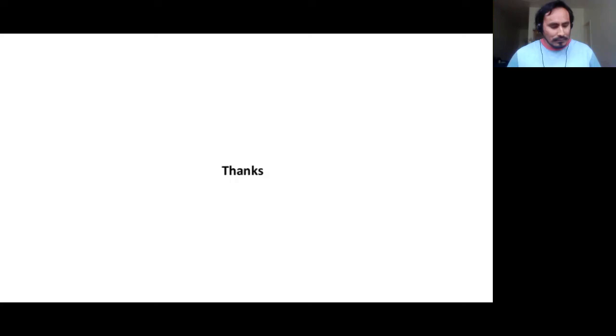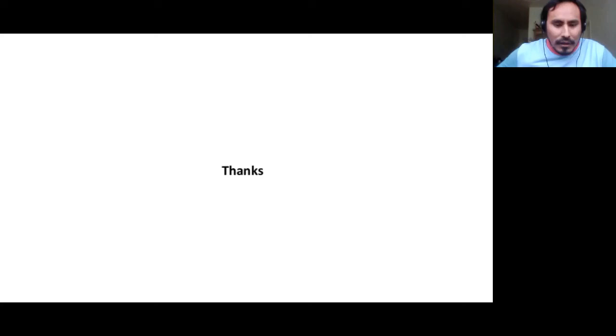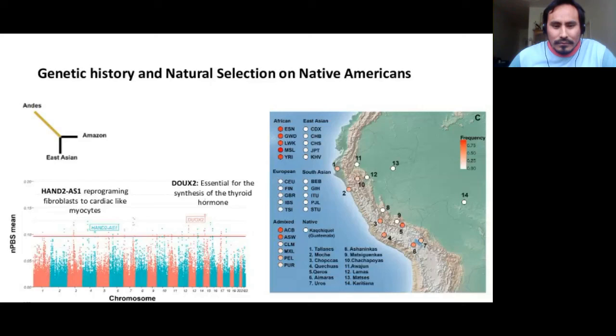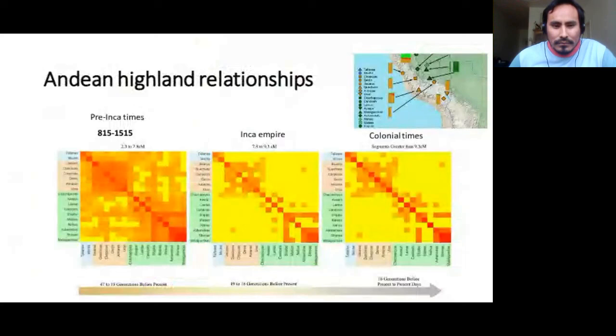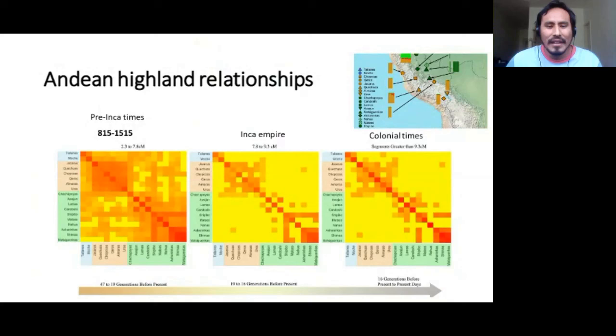That was a very excellent talk, Victor. It was really interesting. So to any of our audience, if you have any questions, please feel free to fill them in the Q&A, and I will ask Dr. Borda some questions to get the ball rolling while everyone types. When you showed your heat maps, I noticed in the bottom right there was a consistently high relation area. Is there any reason for that — why that one stayed consistently associated instead of homogenizing like the rest?